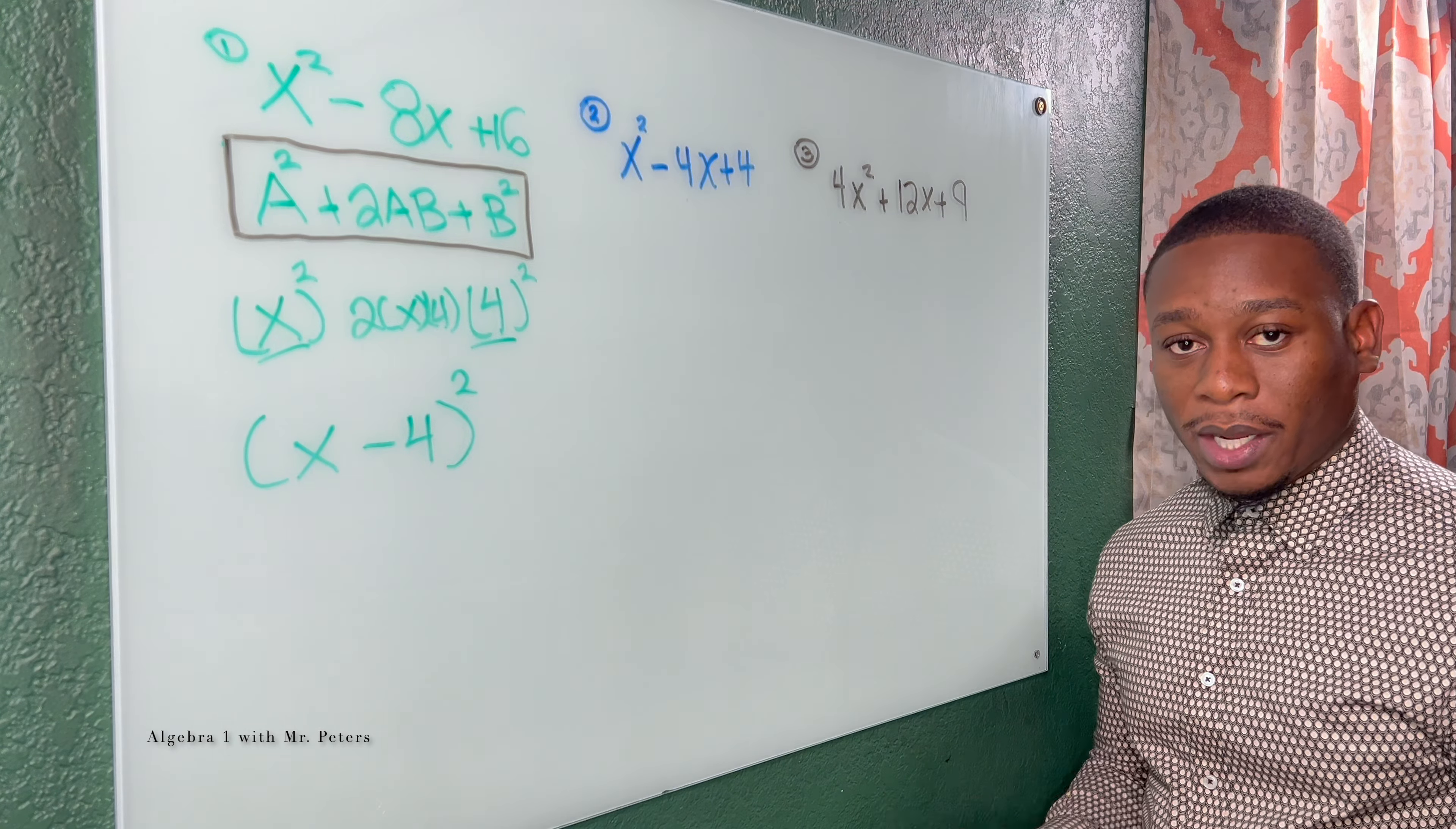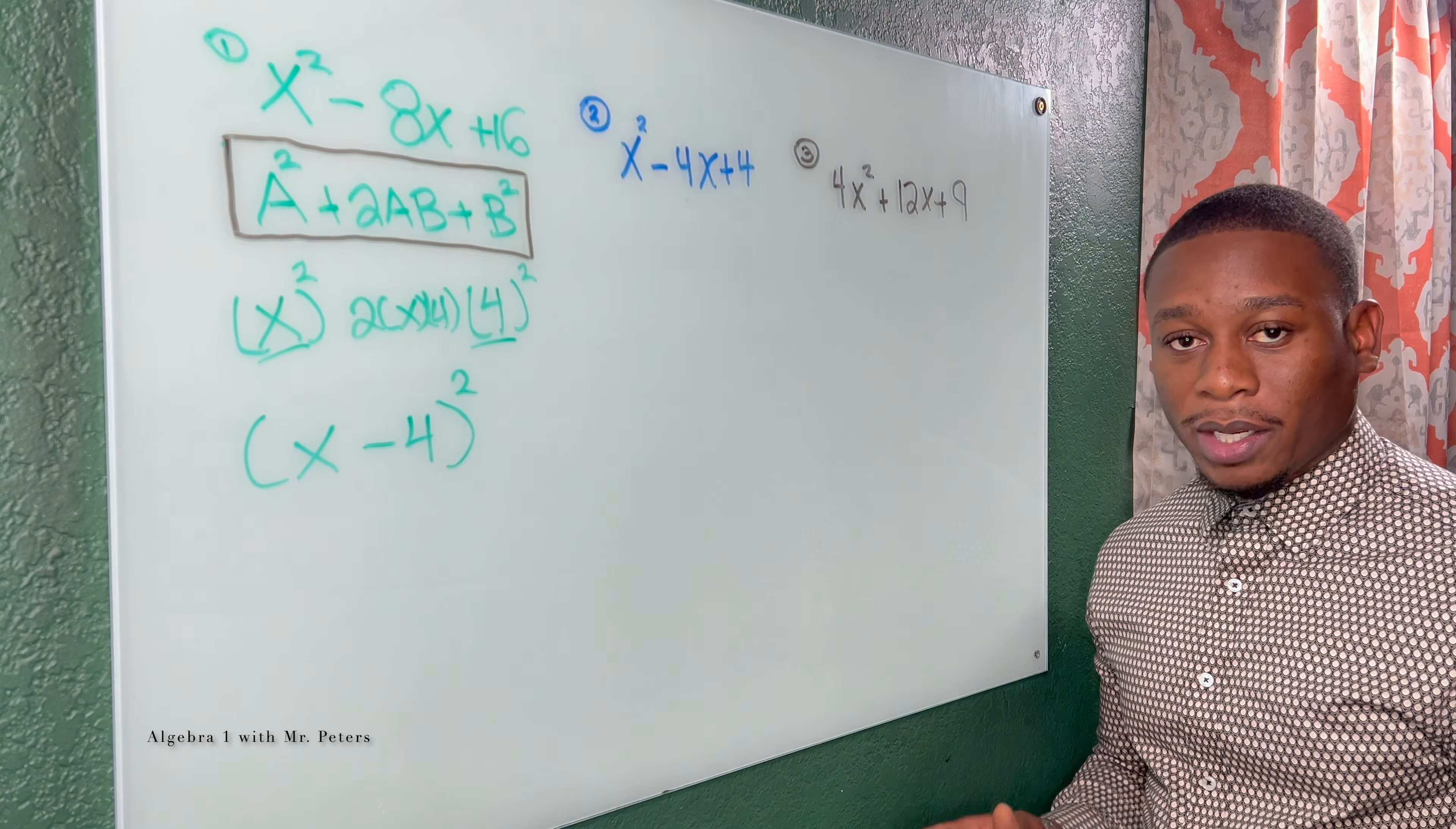So this is going to be x minus 4 squared as a final answer. If you want to double check this, just write it out and you could FOIL. So we're saying x minus 4 times x minus 4. This is a way just to double check.